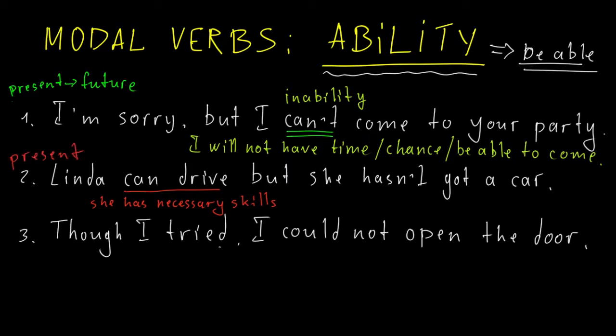Number three. Though I tried, I could not open the door. And here we talk about past events. So, in the past, maybe yesterday, maybe a month ago, maybe two hours ago, it doesn't matter really, I tried to open the door, but I could not open. In other words, I didn't have ability, didn't have any chance, or was not able to do it.